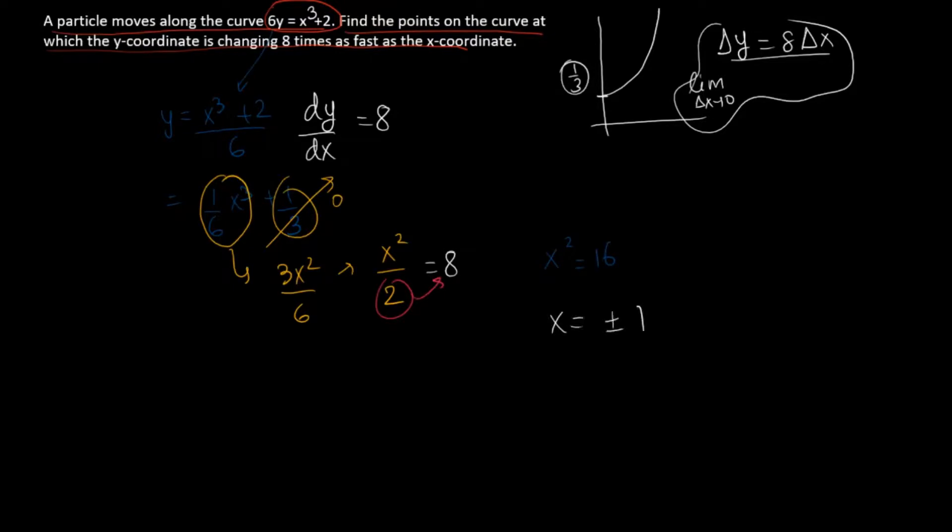x is equal to plus minus 4. At x equals plus 4, your value will be 1 over 6 of 4 cubed plus 2. 4 cubed is 64 plus 2 is 66, 66 divided by 6 is equal to 11. So the first value is 4, 11. This condition will satisfy at this point.